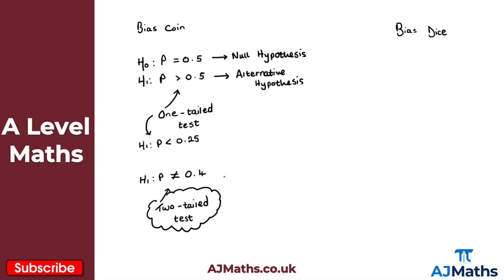H0 will always follow the same format. If we're looking at a binomial distribution with parameters n and p, H0 always states that p equals some value. For a two-tailed test, H1 states p is not equal to that value. For a one-tailed test, H1 states p is either strictly greater than or strictly less than the value. The next video covers one-tailed tests, and the one after covers two-tailed tests.